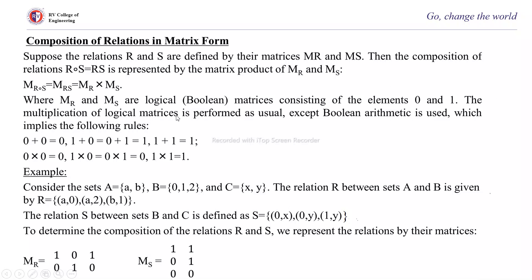The multiplication of logical matrices is performed as usual except Boolean arithmetic is used, which implies the following rules: 0+0=0, 1+0=1, 0+1=1, and 1+1=1. Also, 0×0=0, 1×0=0×1=0, and 1×1=1. You should remember that 1+1 is 1, not 0.